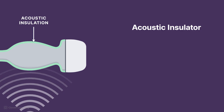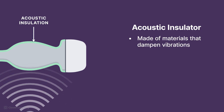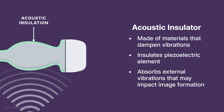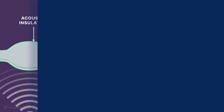Beneath the electrical shielding is the acoustic insulator. The acoustic insulator is made of materials that dampen vibrations, such as rubber-like polymers or foam-based materials, to insulate the piezoelectric element and to absorb any vibrations that may impact image formation.